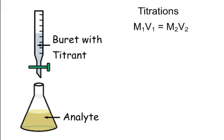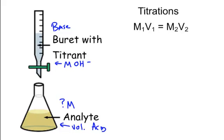We also do titrations with acids and bases. If you have an analyte — the solution below — whose molarity you don't know but you know the volume, you can titrate it using a burette containing a titrant of known molarity. For example, put a base in the burette if you have an acid below. Always rinse out your burette with your titrant first to ensure the correct concentration. You measure how much volume you add to reach the equivalence point, then use M1V1 = M2V2 — acid on one side, base on the other — to find the unknown molarity.